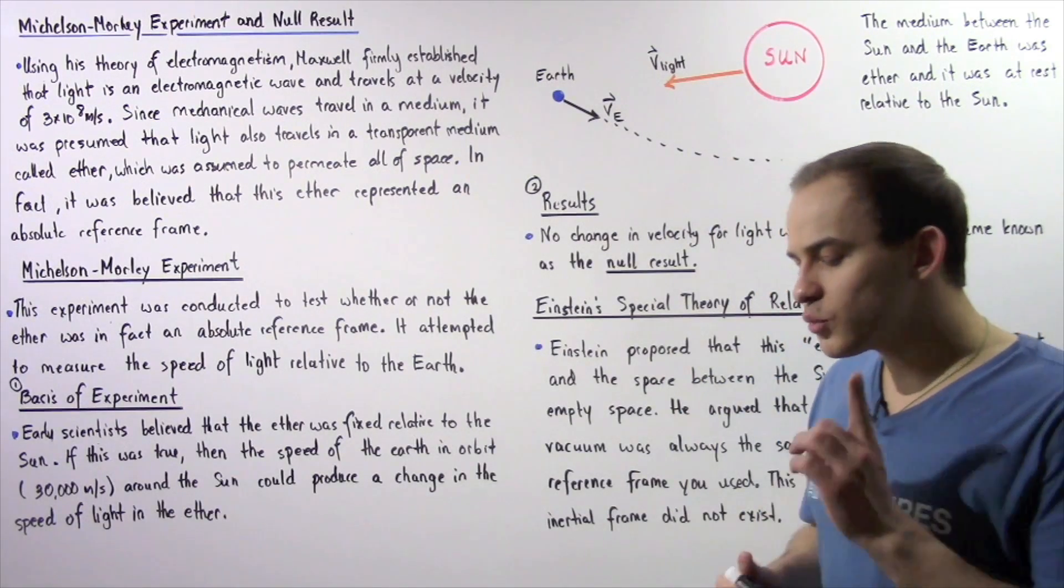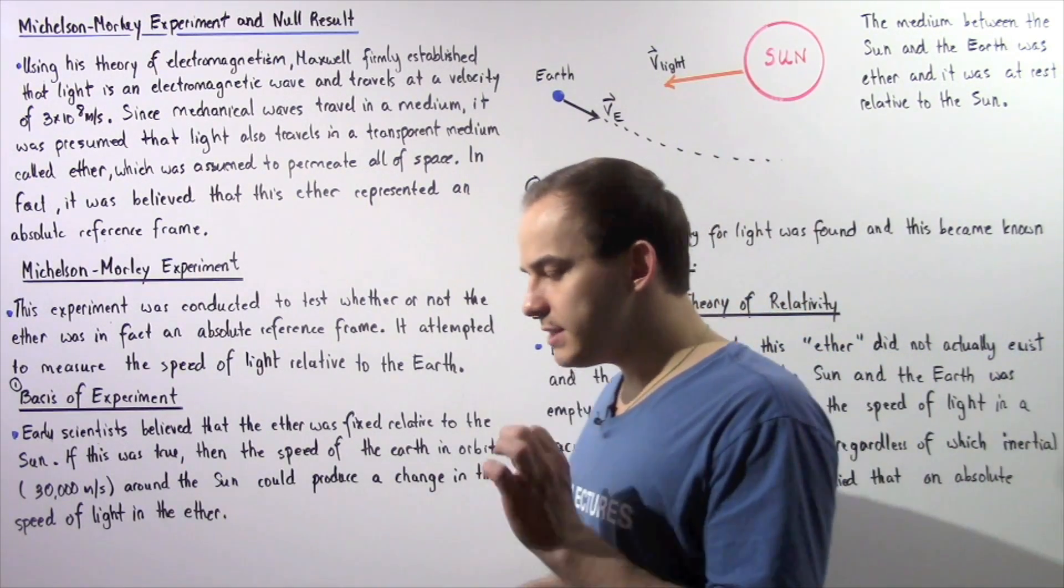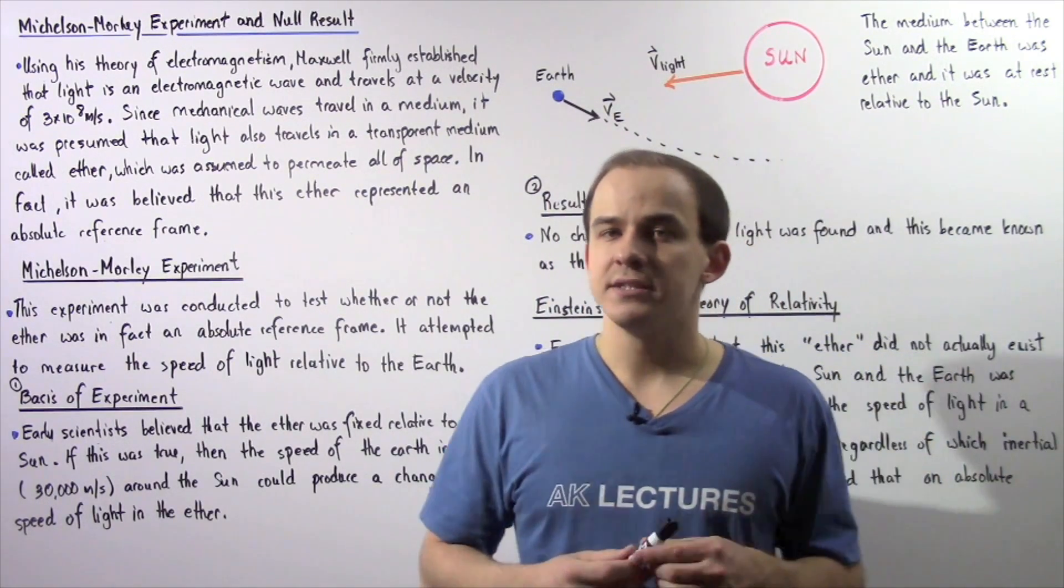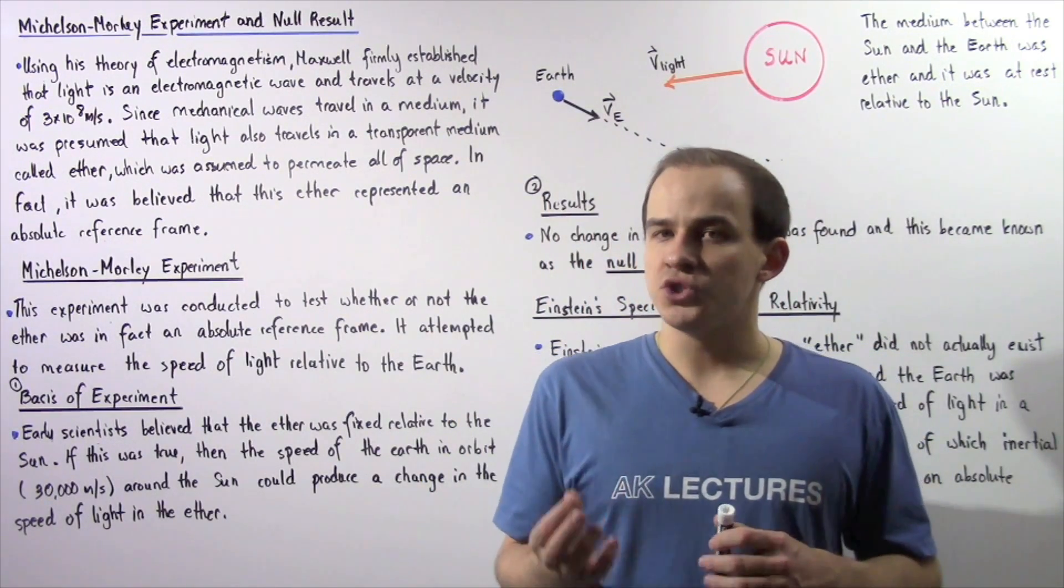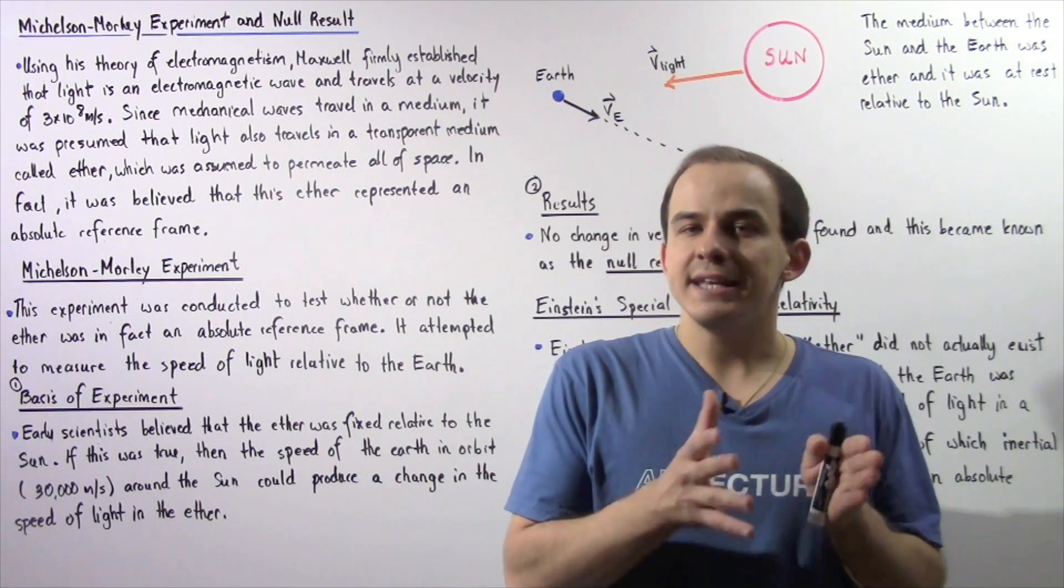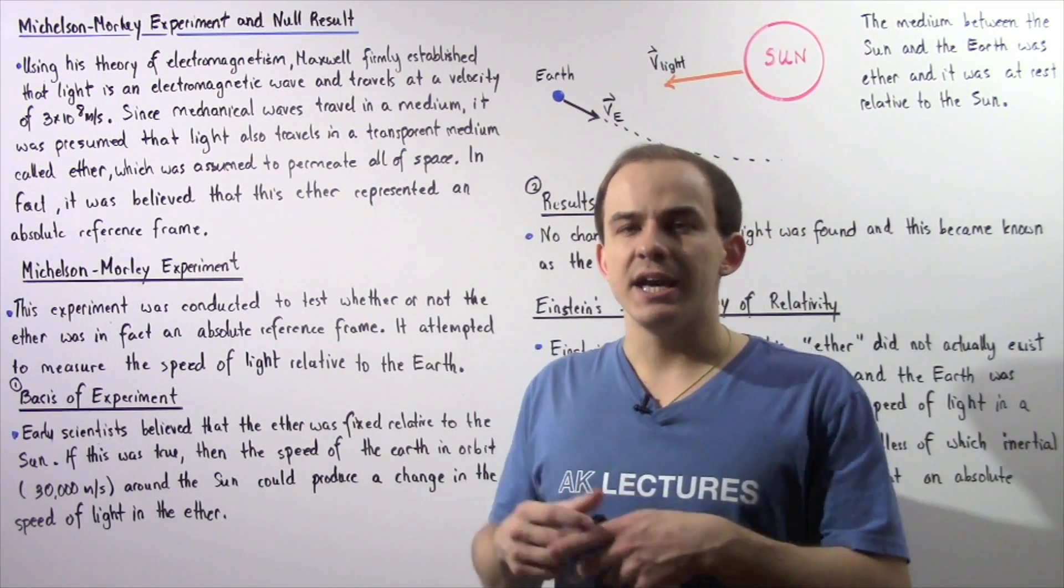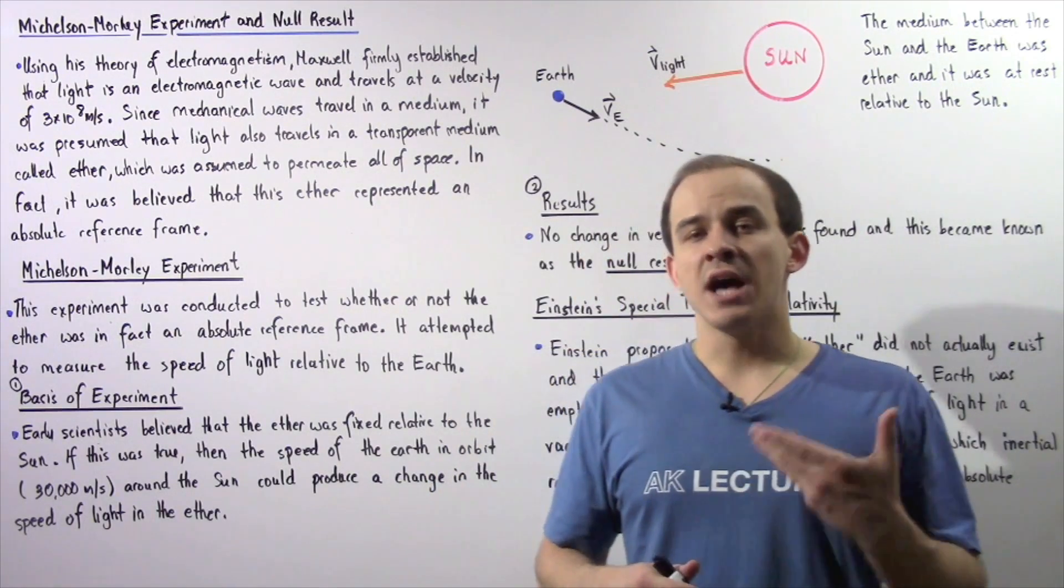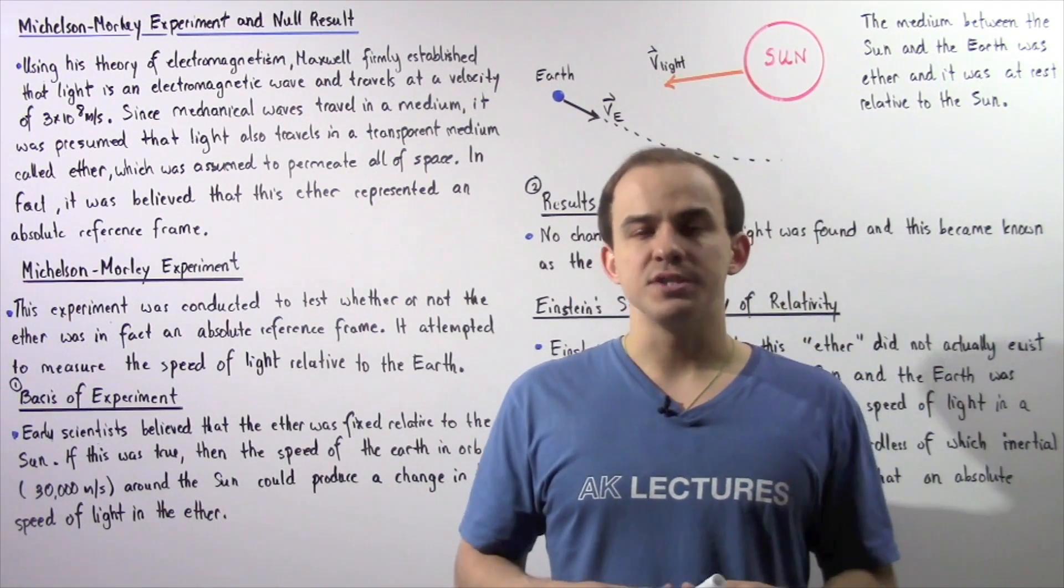But first, let's recall a very important piece of information. Using his theory of electromagnetism, Maxwell was able to confirm that light is in fact an electromagnetic wave that propagates with a velocity of 3 times 10 to the 8 meters per second.